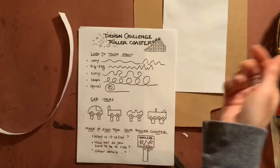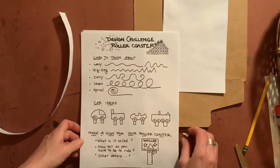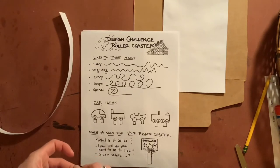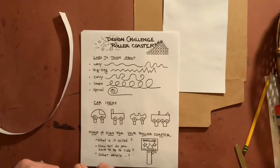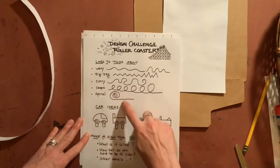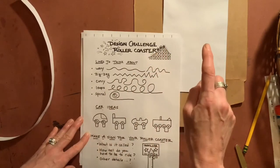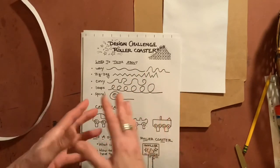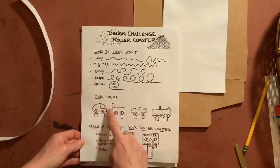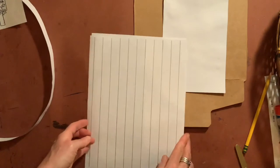With this STEAM challenge, I want you to realize that artists are often the people who design really cool ideas, and then engineers figure out how to build them. So today you're going to be both artist and engineer. Think about what kinds of hills you want on your roller coaster — do you want loops where people go upside down, or a zigzag? Think about that first, then get started. We'll come back to this page once we finish to look at car ideas and make a fun sign for your roller coaster.